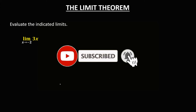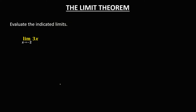Welcome to MathStorya. Let's have this topic: the Limit Theorem. We have this given — evaluate the indicated limit: the limit of 3x as x approaches negative 2. On this case, we can use direct substitution, so we just need to substitute negative 2 for x. This becomes 3 times negative 2, which simplifies to negative 6. So the limit is equal to negative 6.